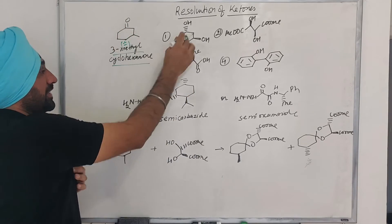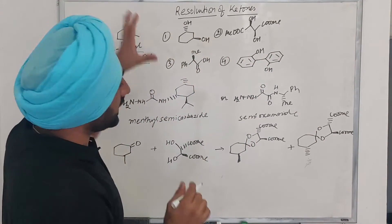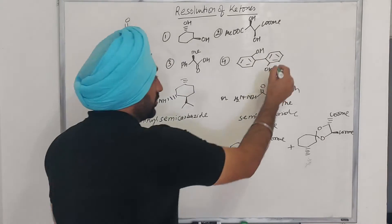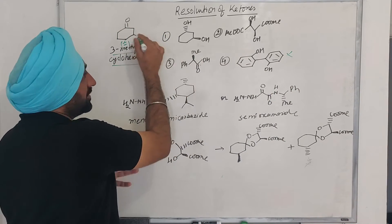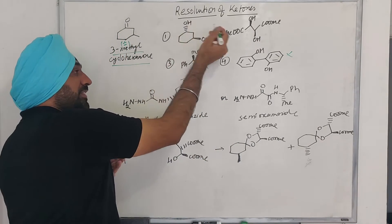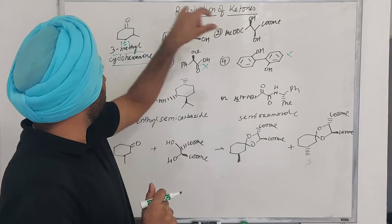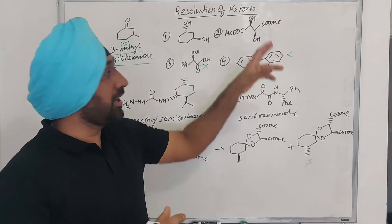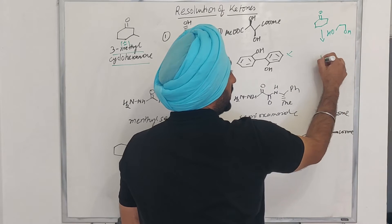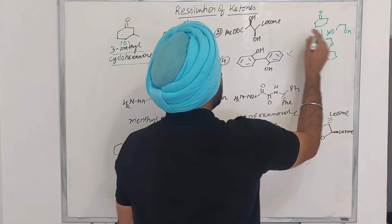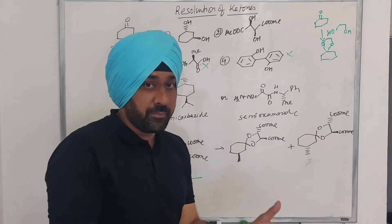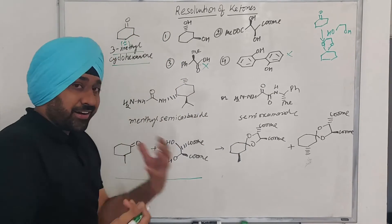Coming back to the actual question: how are we going to resolve 3-methylcyclohexanone? They could have asked any other ketone that is unsymmetrical and has a chiral center. This is a racemic compound and these are the options given to us. We can clearly see ketone reactions as we have discussed. Phenols are not going to react with the ketones, so we can neglect that option. Similarly, a chiral acid is not going to give us any reaction with a ketone, so we can neglect that option as well. We can think about 1,3-diol and 1,2-diol. We clearly know that ketones do form acetals with 1,2-diols.